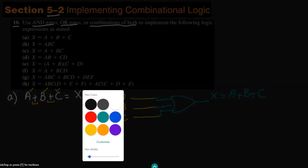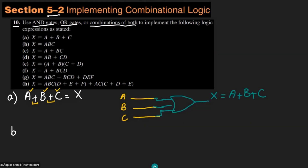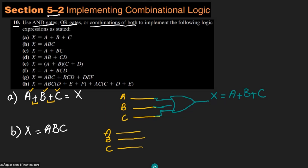Similarly, for part B, the output is abc. Again we have three inputs: a, b, and c. The operation performed is the AND operation. So let me draw the AND gate with these three inputs. The AND gate is represented by this symbol, and since the number of inputs is not restricted to two, I am drawing a three-input AND gate.